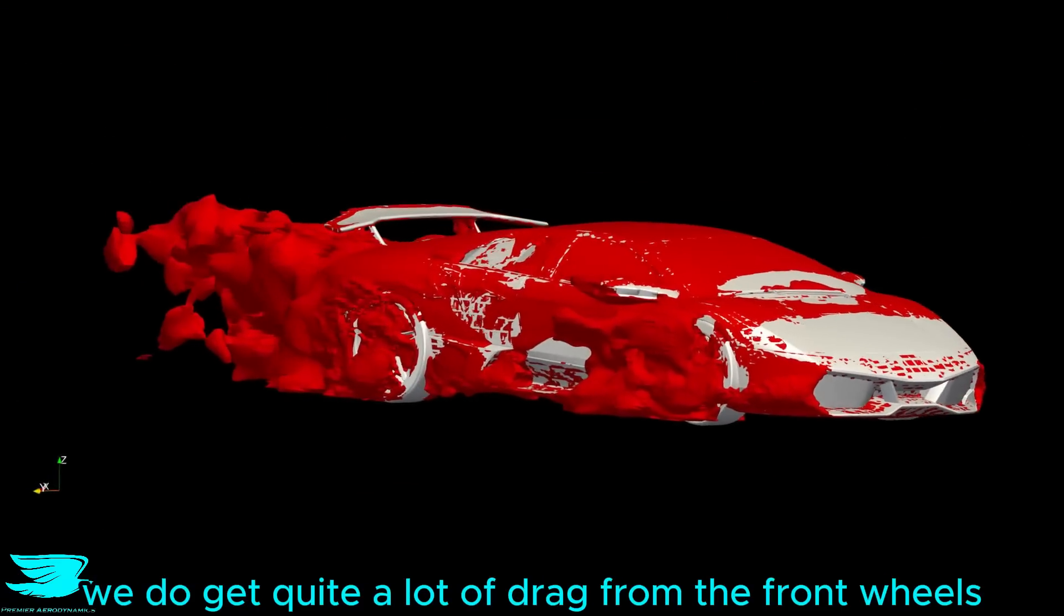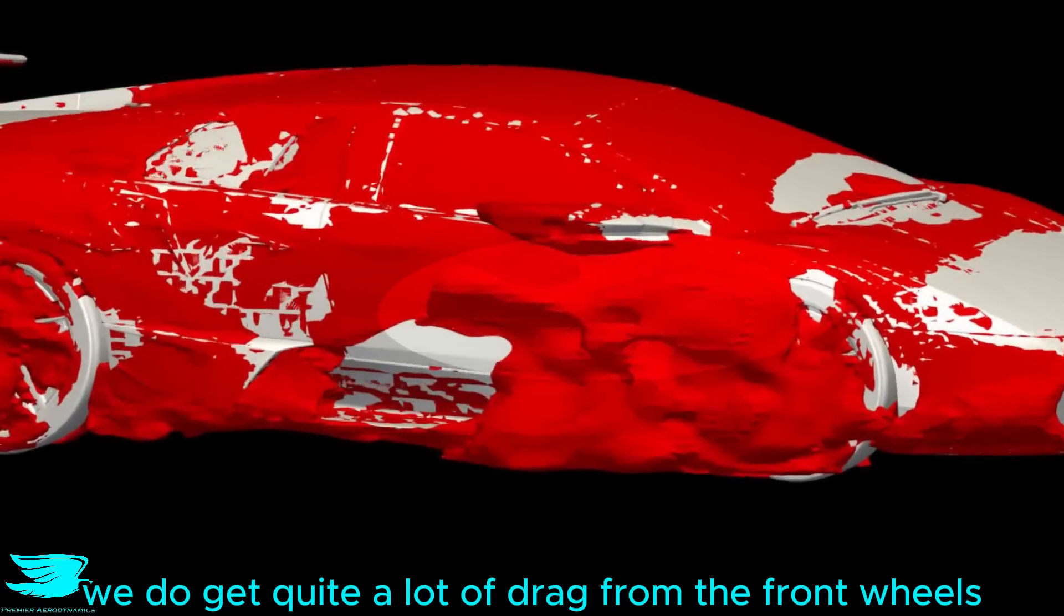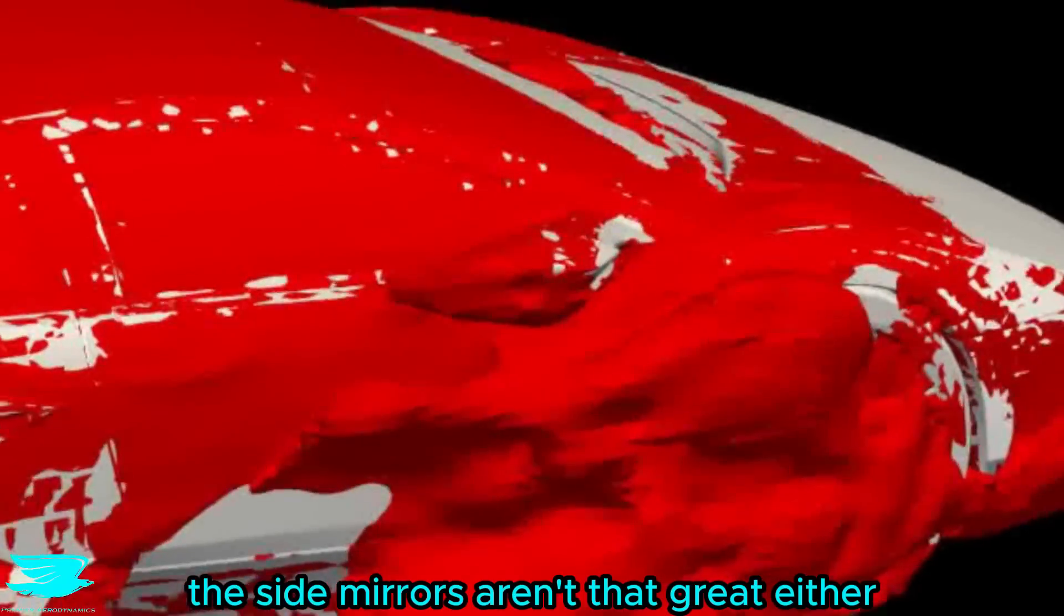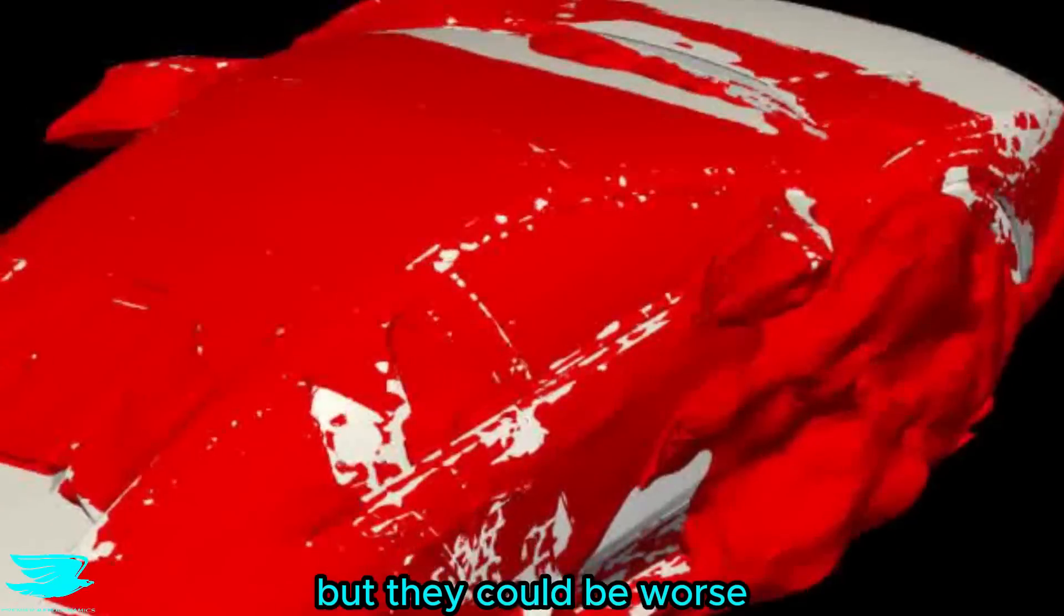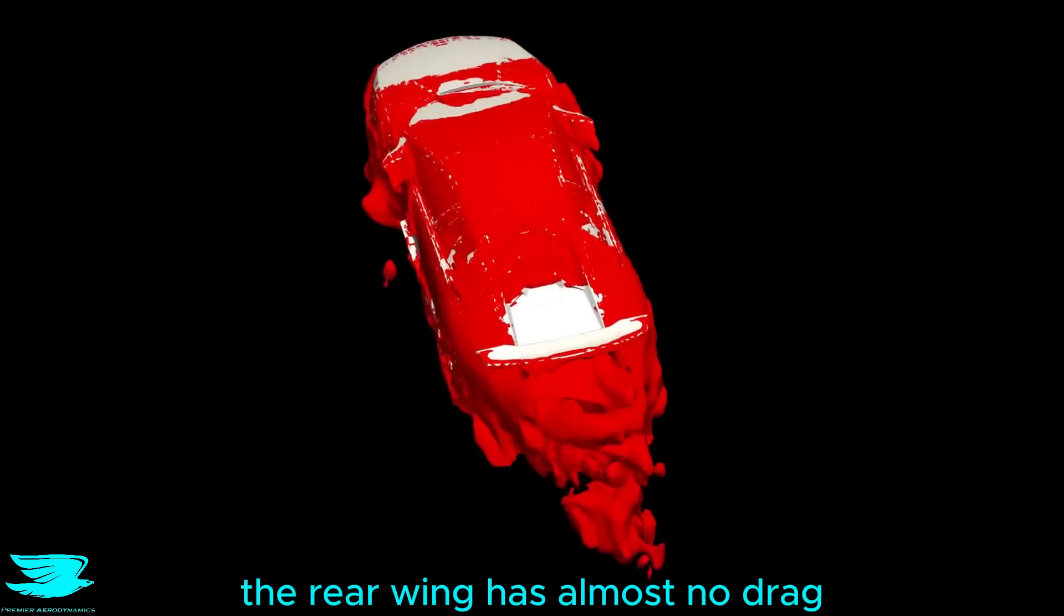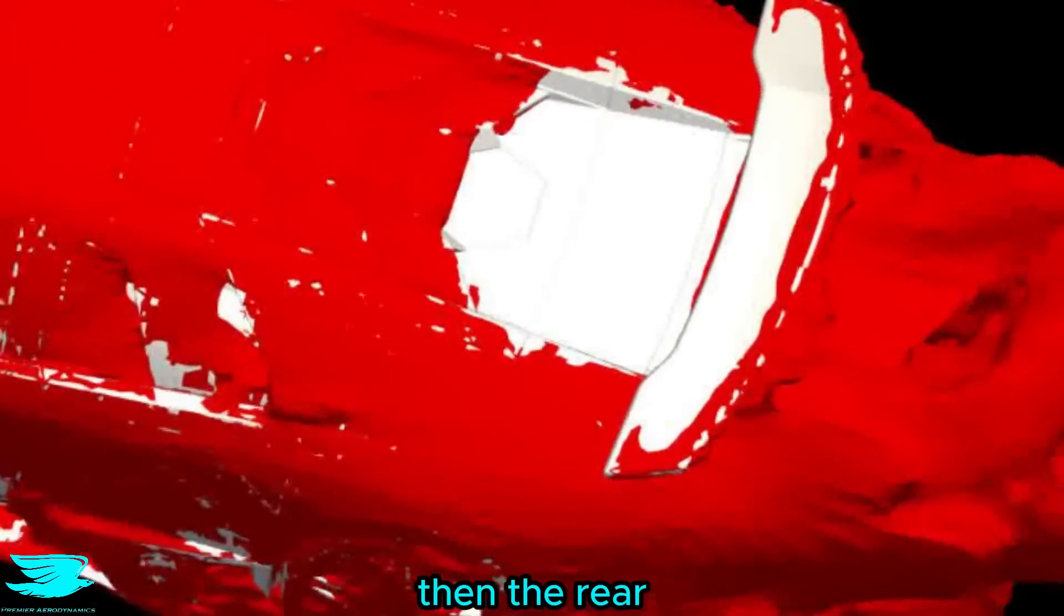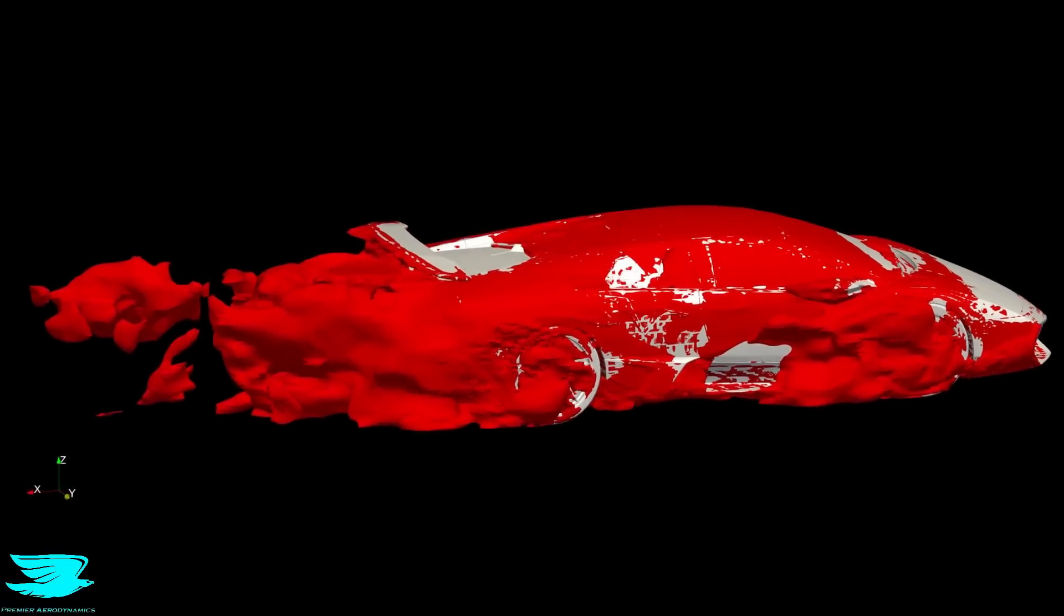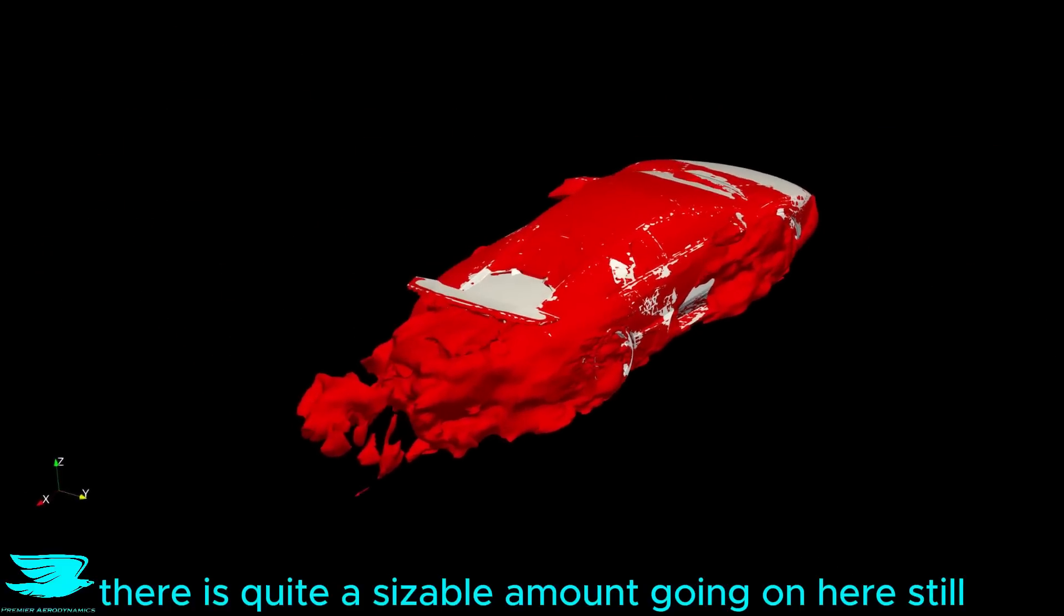Looking at the drag, we do get quite a lot of drag from the front wheels, especially out of the top, which isn't that common. The side mirrors aren't that great either, but they could be worse because at least the wakes are sucked into the car instead of blowing out. The rear wing has almost no drag, which is great. Then the rear, because of the combination of the pressure drag and the vortex drag, there is quite a sizeable amount going on here still.